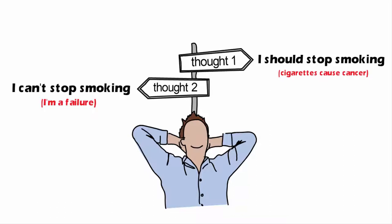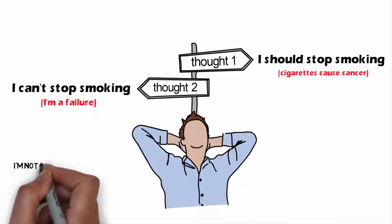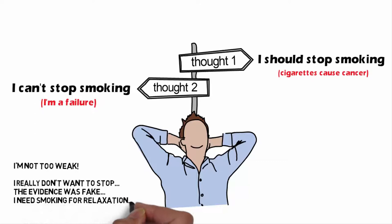To protect his ego and not feel as a failure, Mark could tell himself, I'm not too weak, I really don't want to stop. The evidence was fake. I need smoking for my relaxation. Or I may live a shorter but happier life.